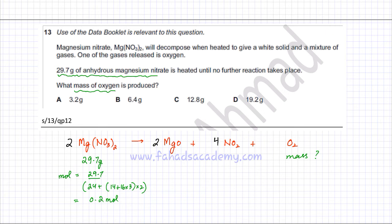Now the ratio in which these two are reacting is two magnesium nitrate producing one oxygen molecule, so it's 2:1. The ratio is pretty obvious. Whatever the moles of magnesium nitrate, the moles of oxygen would be half of that. So if it's 0.2 moles, the moles of oxygen gas would be 0.1 moles.